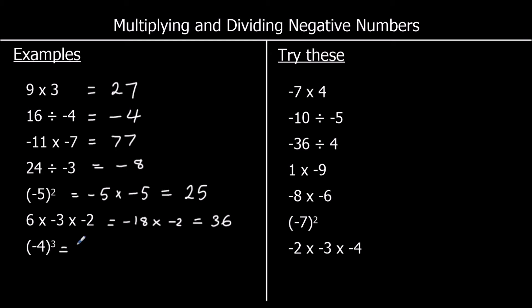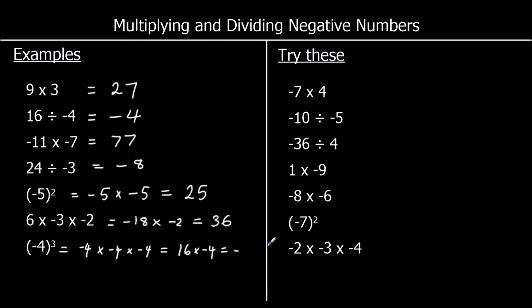The last one: negative 4 cubed means negative 4 times negative 4 times negative 4. Step one — negative 4 times negative 4: a negative times a negative is positive, and 4 times 4 is 16. Then 16 times negative 4: a positive times a negative is negative, and 16 times 4 is 64, so the answer is negative 64.